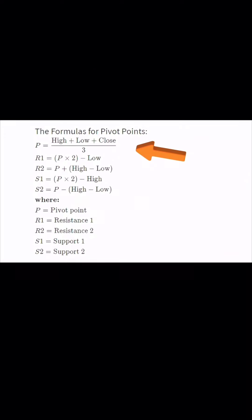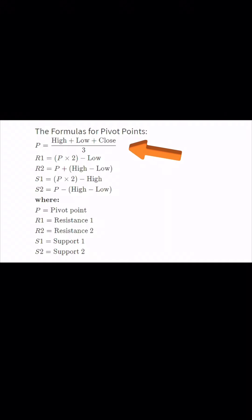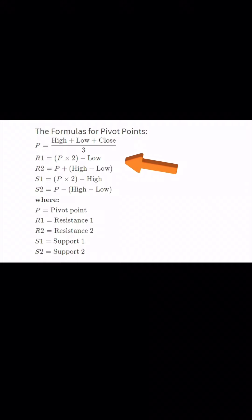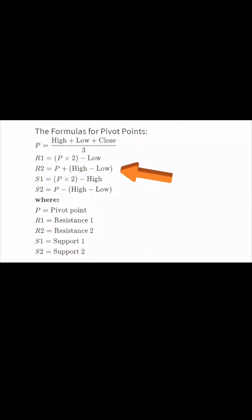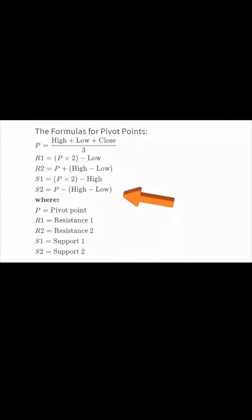The pivot formula is: high plus low plus close divided by 3. R1 is the pivot times 2 minus the low price. R2 is the pivot price plus the high minus the low. S1 is the pivot times 2 minus the high. S2 is the pivot minus the high minus the low.